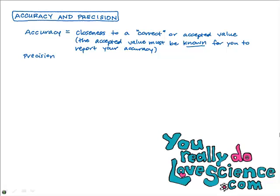Precision is a little bit different. Precision I like to call repeatability — or consistency in your measurements. Have you ever had a bathroom scale that's like five pounds off, and it's really, really consistent? I mean, it's always five pounds off. It's not accurate, but at least it's consistent. Well, that bathroom scale is precise because its measurements are consistent. Now you can have good precision and good accuracy, which is ideal, or you can have good precision with poor accuracy. If your measurements are consistent and not all over the place, you're probably doing a good job and being careful in your lab.